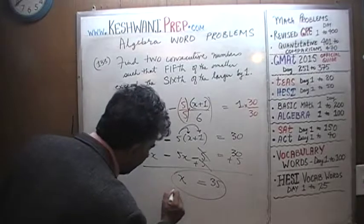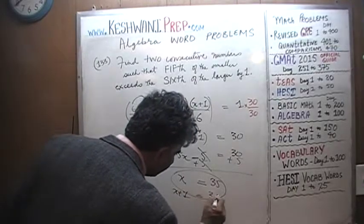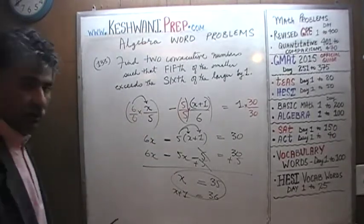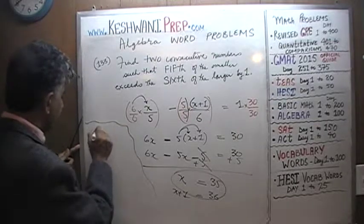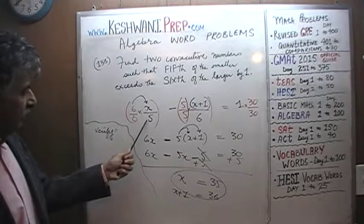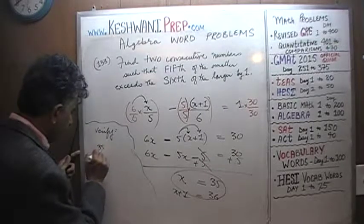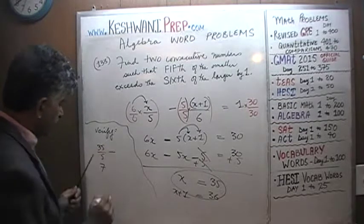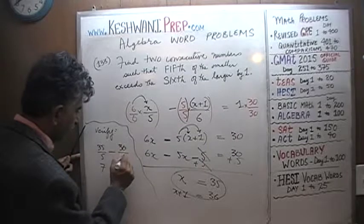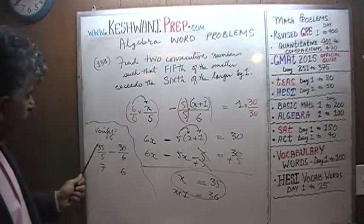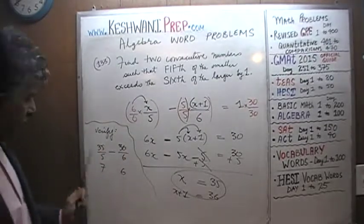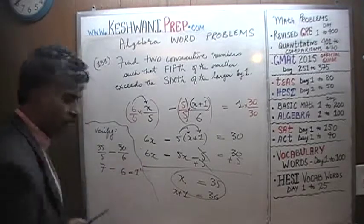If x is 35, then the larger number — the next consecutive number — is 36. Let's verify: the fifth of the smaller number, 35, is 7. We're told that exceeds the sixth of the larger number. The sixth of 36 is 6. And indeed, 7 exceeds 6 by 1, which it does. Our answer is correct.